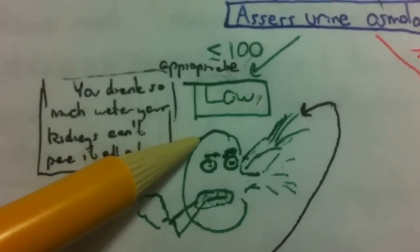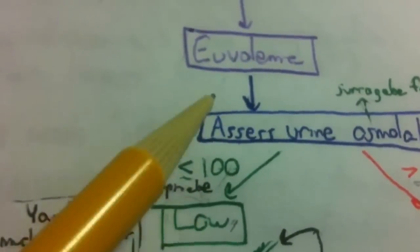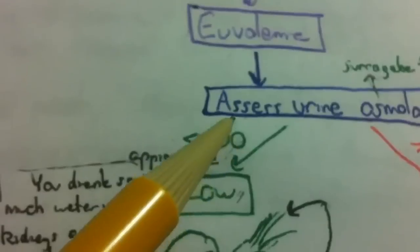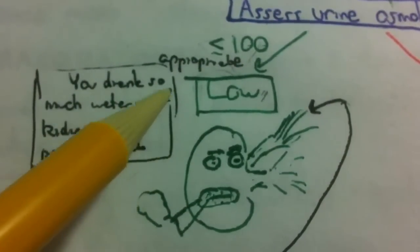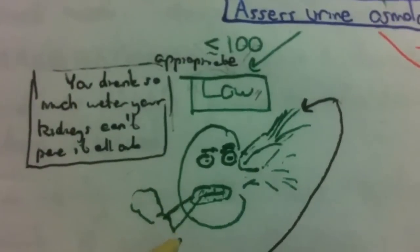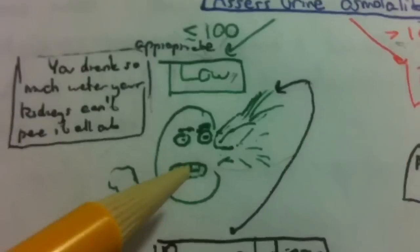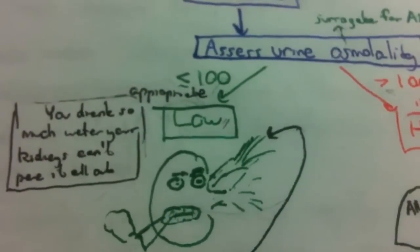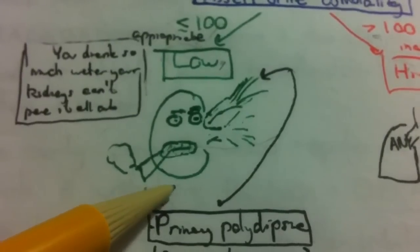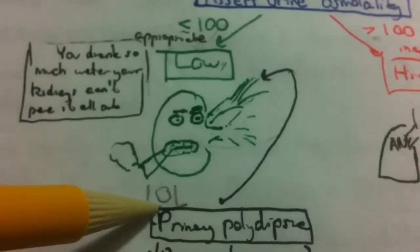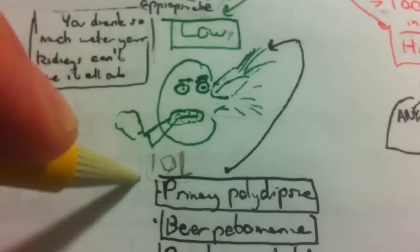The reason you would have euvolemic hyponatremia with a low ADH is that you drank so much water that your kidneys cannot pee it all out. The kidney is working fine — it's excreting water as fast as it can — but you were drinking so much water that the kidney cannot keep up. That probably takes about 10 liters of free water.